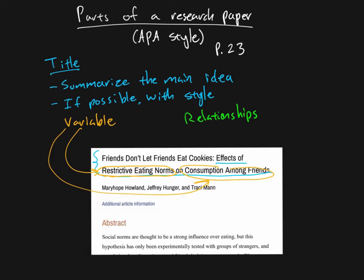And the other thing that they're telling us here is they're telling us something about the type of relationship that they were investigating. So we'll get into this more later in the class, but this word right here, effects, when they say effects of restrictive eating norms on consumption among friends, what they're saying is that this first variable had some kind of effect on the second one. That means they did a study where they were looking to see what changes one variable would cause in another,